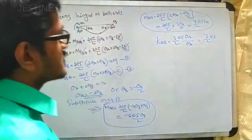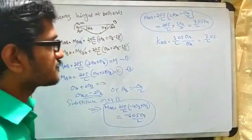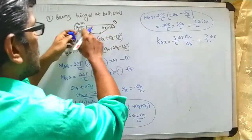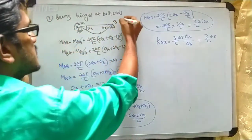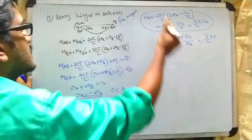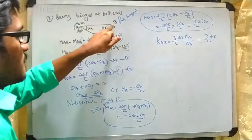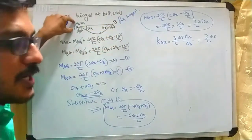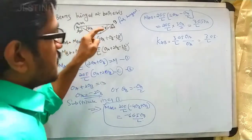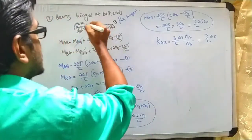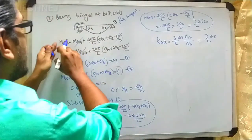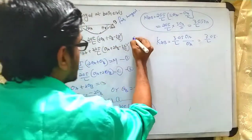In the first case, we discuss when the beam is hinged at both ends. Here, a beam with two hinged supports — the far end being referred to as 'far hinged' — has a moment capital M applied at joint A, developing slopes theta_a and theta_b. We apply the slope deflection equation.